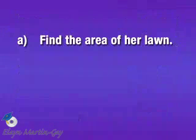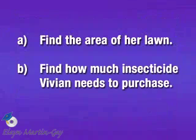For part A, we simply want to find the area of her lawn. Part B then, find how much insecticide Vivian needs to purchase.